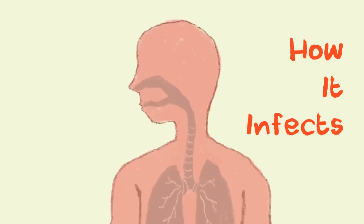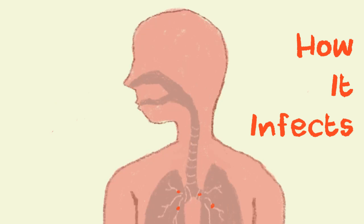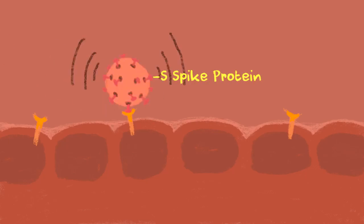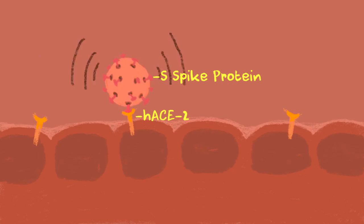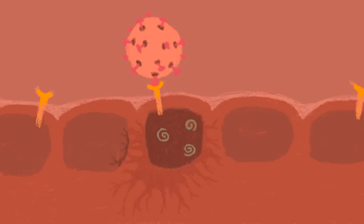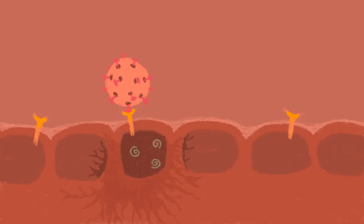SARS-CoV-2 enters the human body through the respiratory path. It attaches to the cells of the lungs using its S-spike proteins to the human angiotensin receptor on the surface of the cell. Then it fuses with the cell membrane, releasing the viral RNA — the genetic material — inside the cell. It then takes control of the host cell machinery and produces proteins and more RNA to replicate itself.